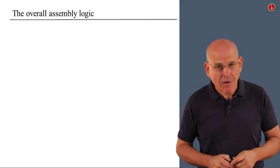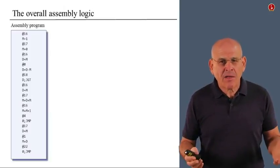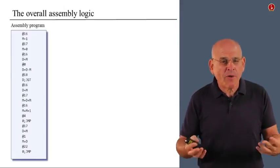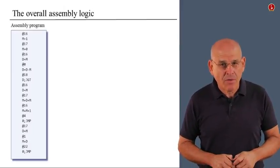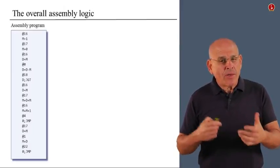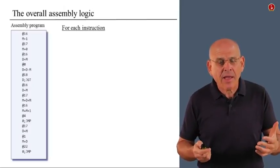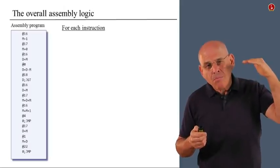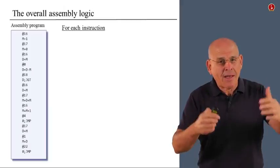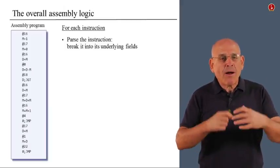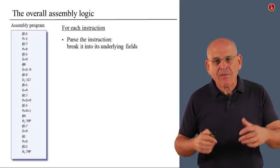So with that in mind, here is the overall assembly logic. We are given a text file, and this text file contains all sorts of characters that hopefully represent a hack program written in symbolic hack code. So how do we translate it into binary? Well, we process this file, and we begin marching through it. And for each instruction, or for each line in this file, we first of all parse the instruction. We break it into its underlying fields.